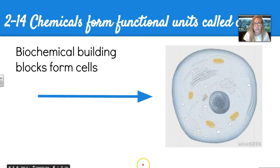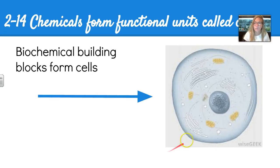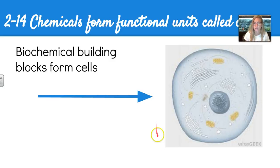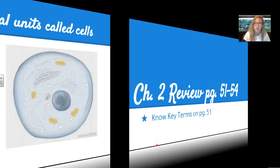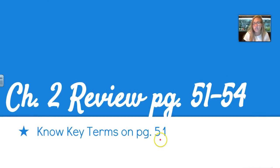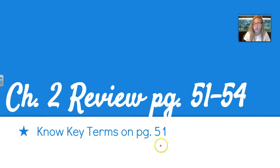Section 2.14 talks about how chemicals form functional units called cells. Our biochemical building blocks form cells, which build up into tissues, organs, and organ systems — which is why we need to touch on this topic. Chapter 2 review is on pages 51 through 54, and you need to know the key terms on page 51. See you guys later.